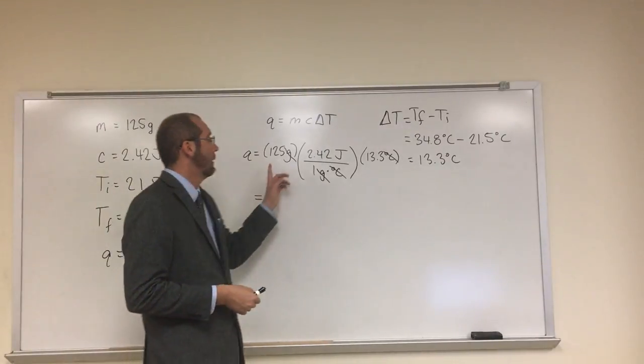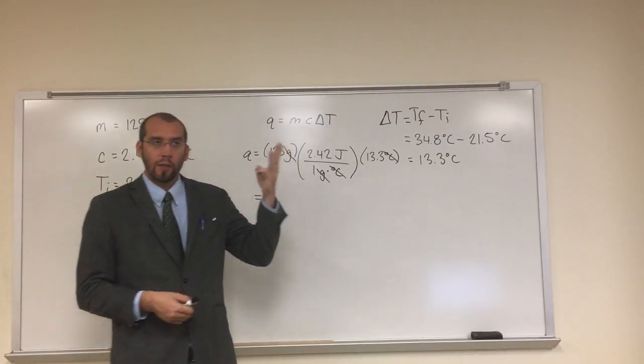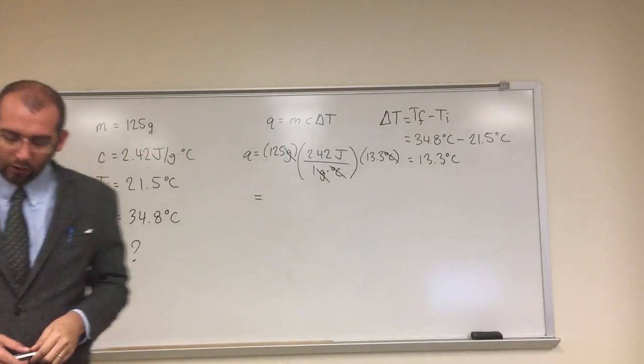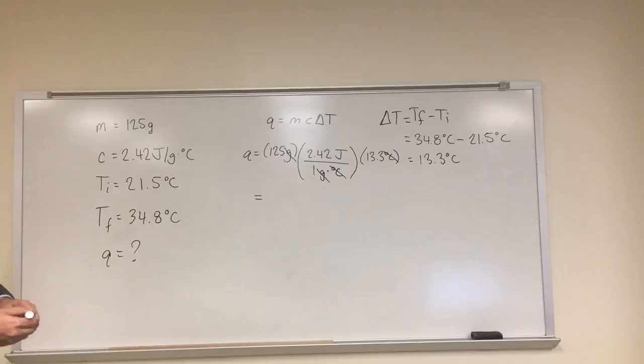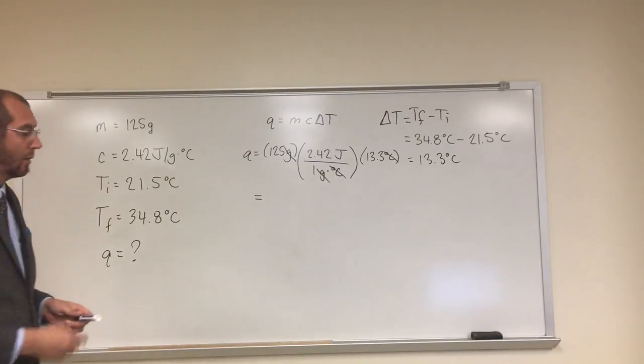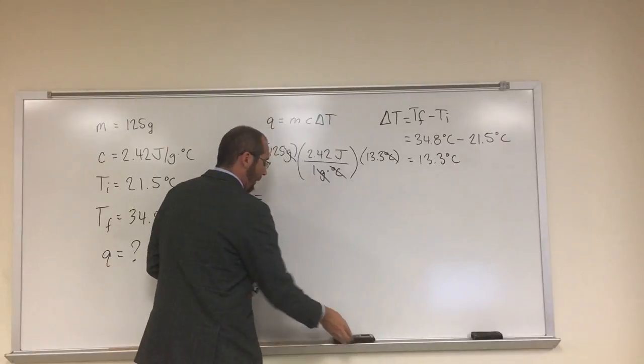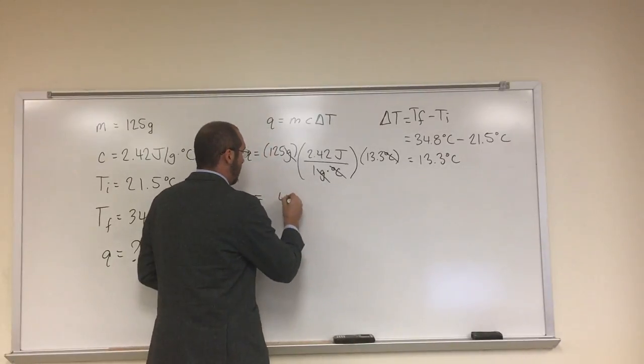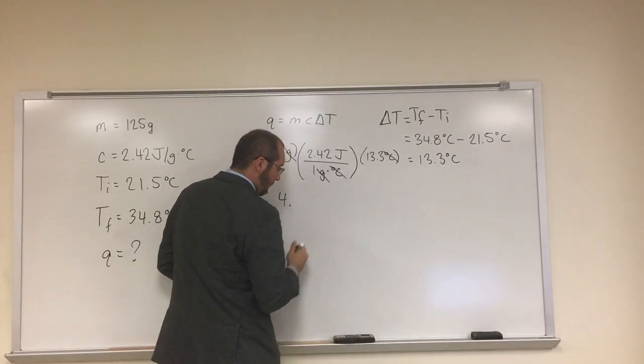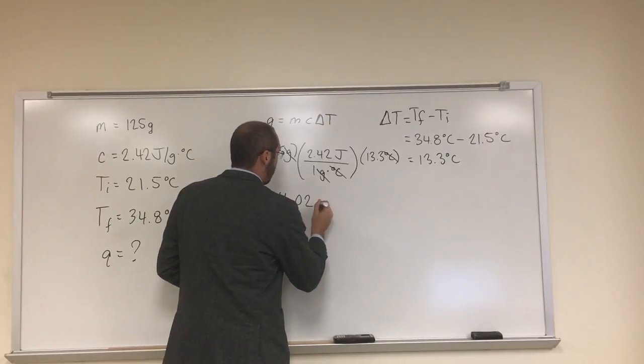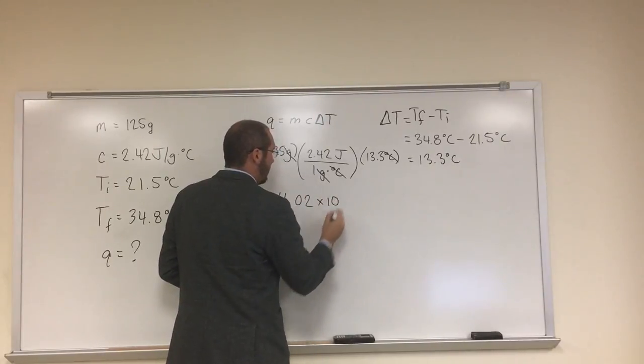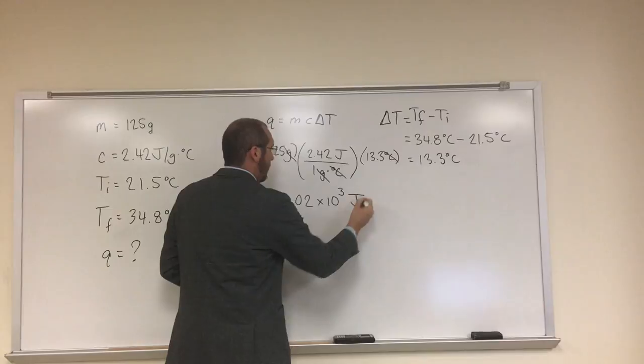all of these numbers have three significant digits, so you can only go to three digits. So even though it says 4000, we're going to have to put that into scientific notation. So 4.02 times 10 to the third joules.